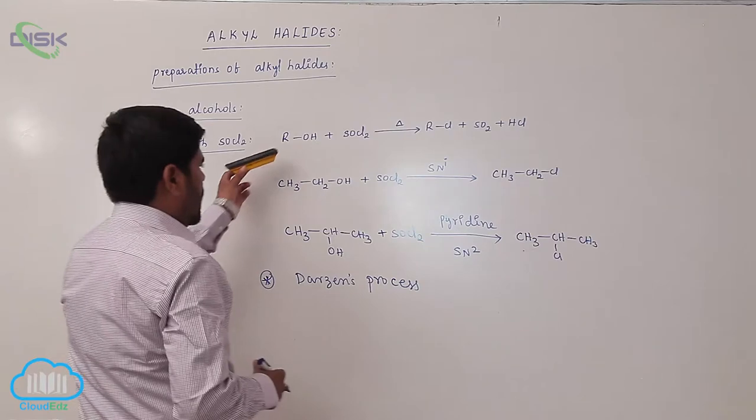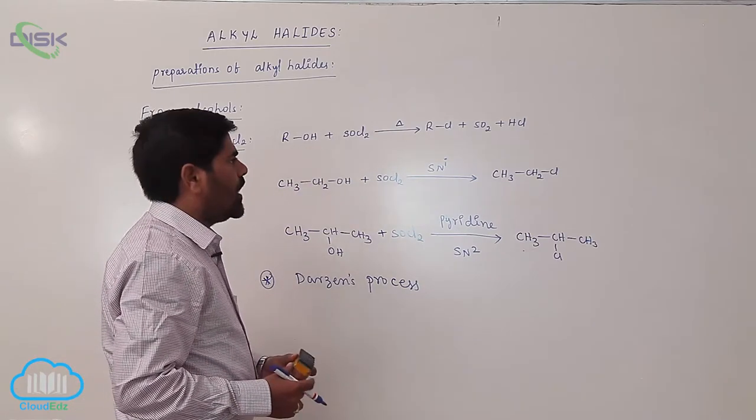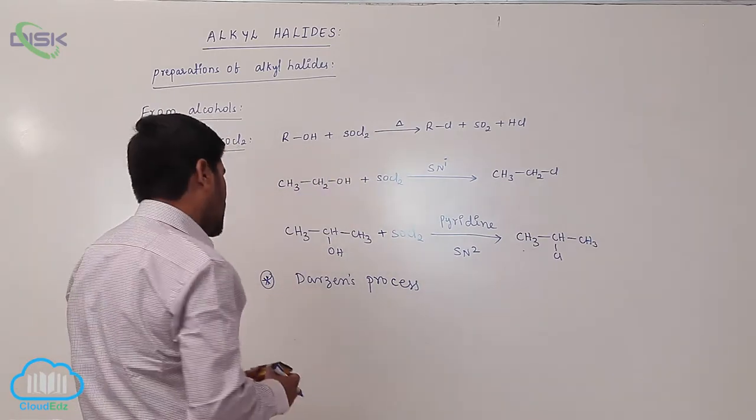So when an alcohol reacts with thionyl chloride, it forms alkyl chloride.